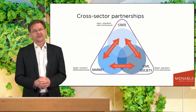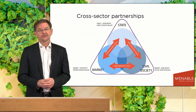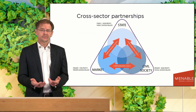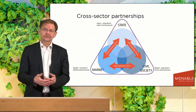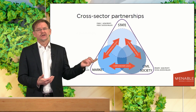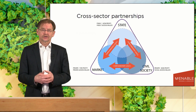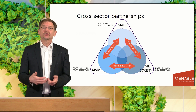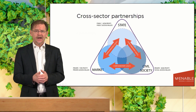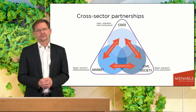The state is represented by governments. It is a public actor and is non-profit. The market is represented by private actors, in particular firms, who work on a for-profit basis. Finally, civil society is also private. They are not part of the government, but they are also non-profit. When these three actors collaborate, different forms of partnerships are formed.